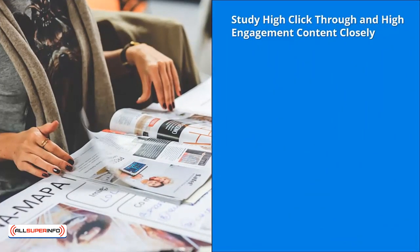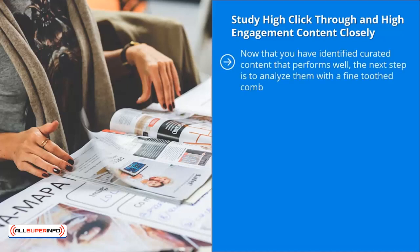Study high click-through and high engagement content closely. Now that you have identified curated content that performs well, the next step is to analyze it with a fine-toothed comb. Ask yourself: what problems are people interested in when they read this piece of content? How are these pieces of content positioned or presented? Do they use some sort of emotional headline? Do they use subheadings that ask questions? Do they drag the person along, or do they just lay out the information dead center? Pay attention to cosmetic issues — people do judge a book by its cover, and blog posts and articles are no different. How are these materials formatted? Do they have big pictures, header pictures, or diagrams?